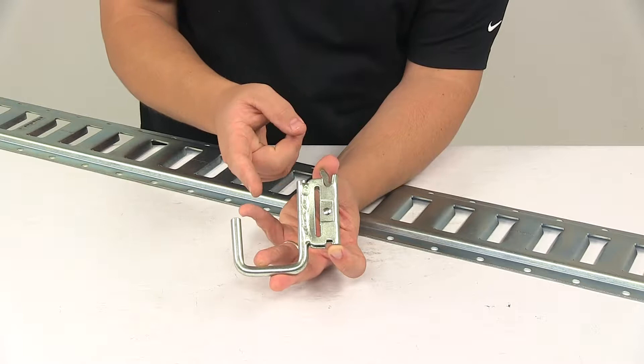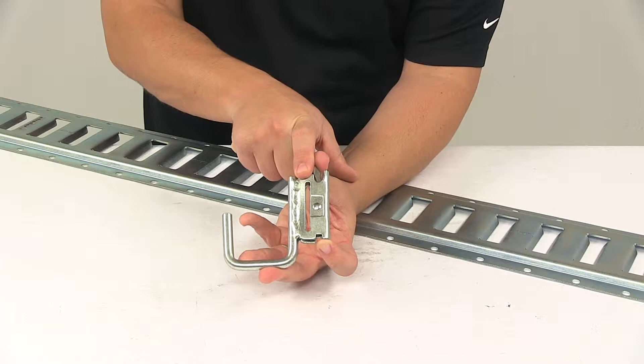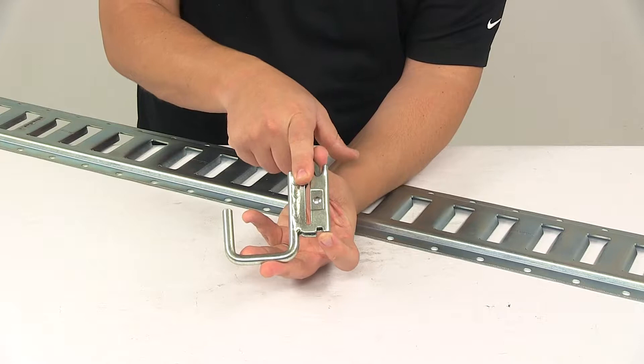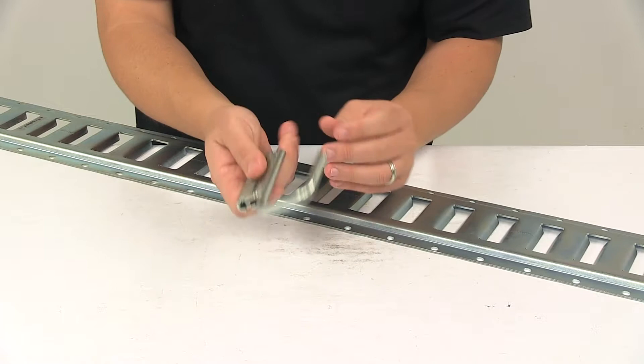A strap is not included—they're sold separately at eTrailer.com. It's an optional feature built into the unit in case you'd like to add one for more security.